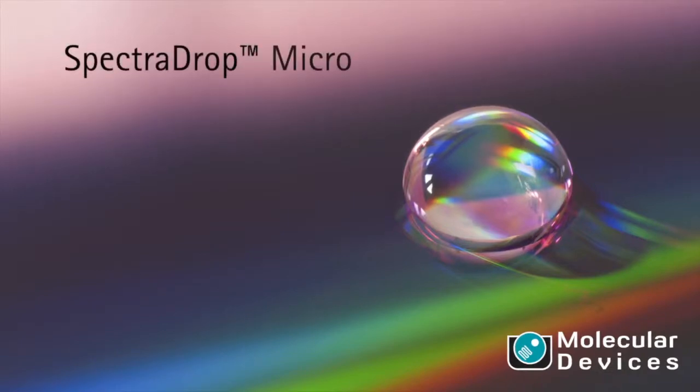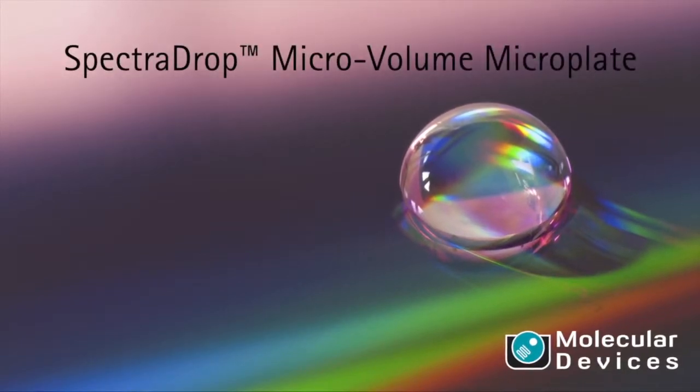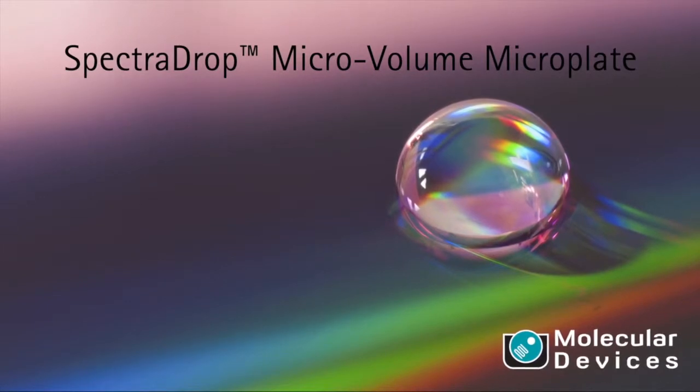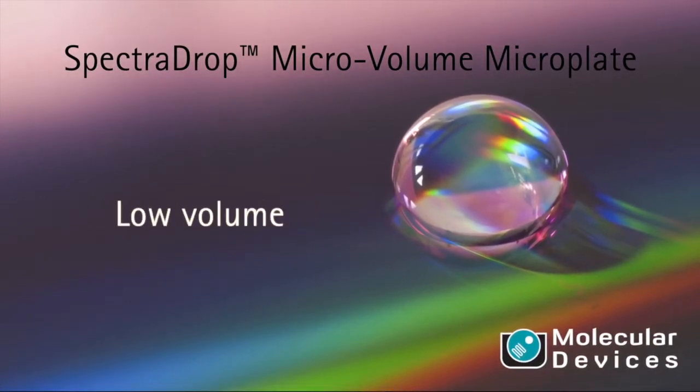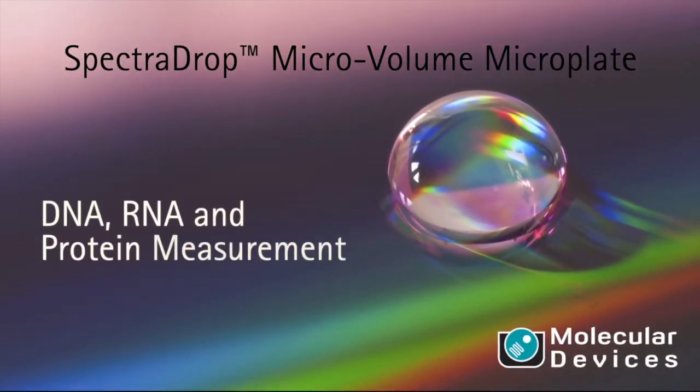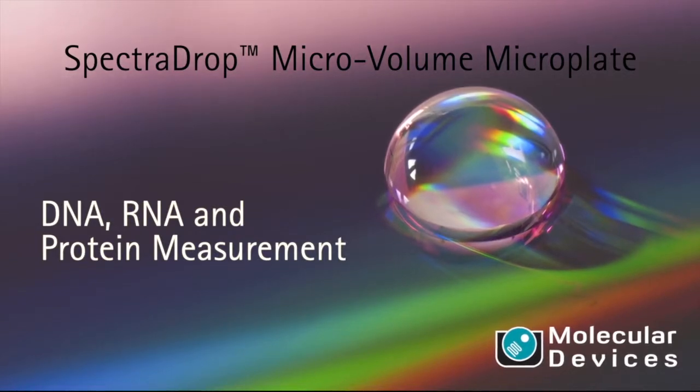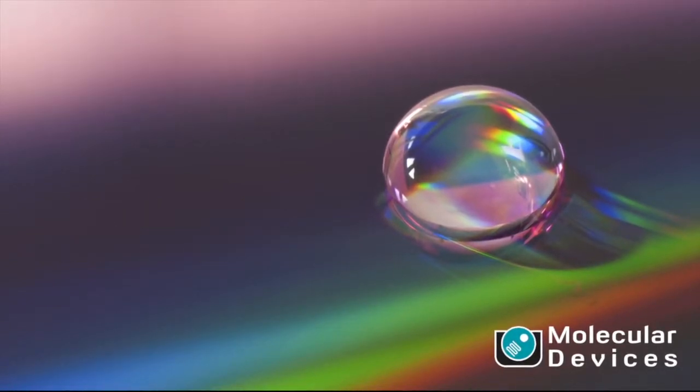Introducing the SpectraDrop Microvolume Microplate. Its innovative and flexible design enables high-throughput, low-volume DNA, RNA, and protein measurements using as little as 2 microliters of sample.